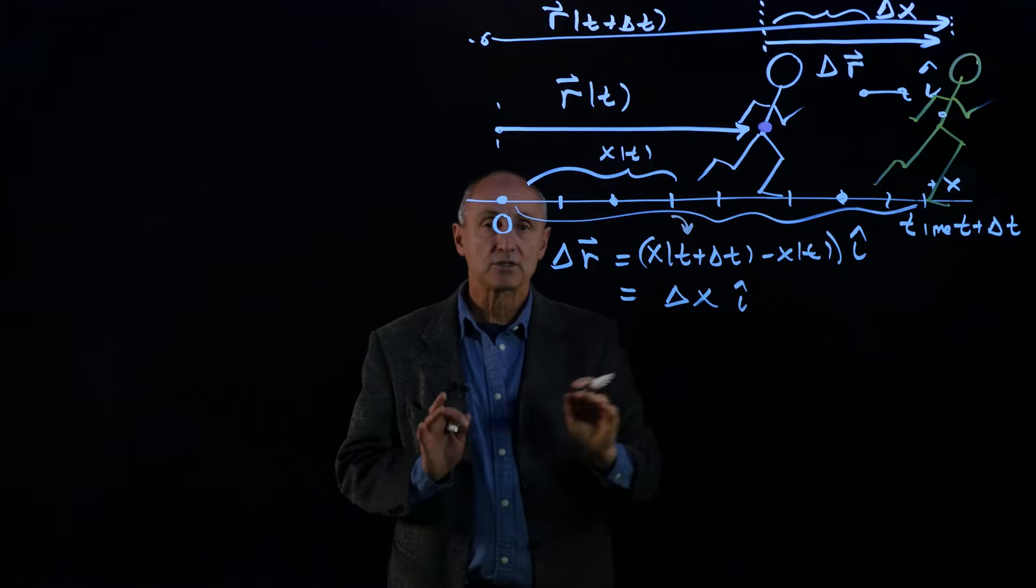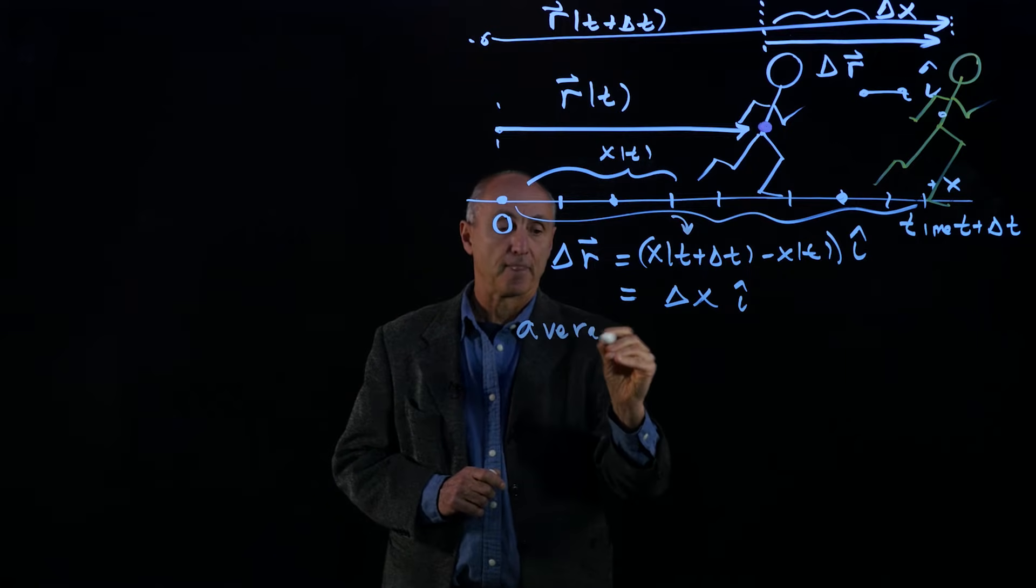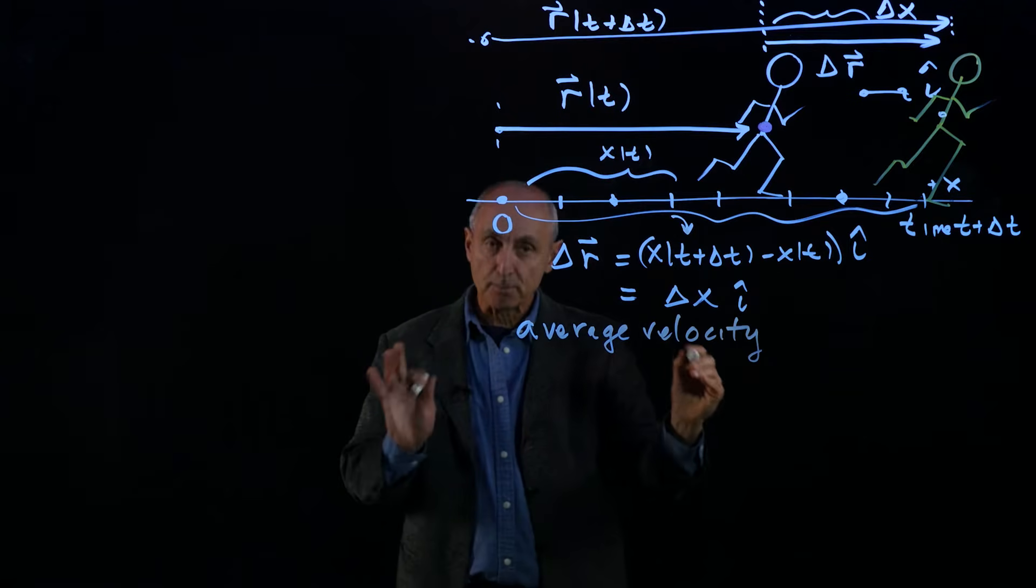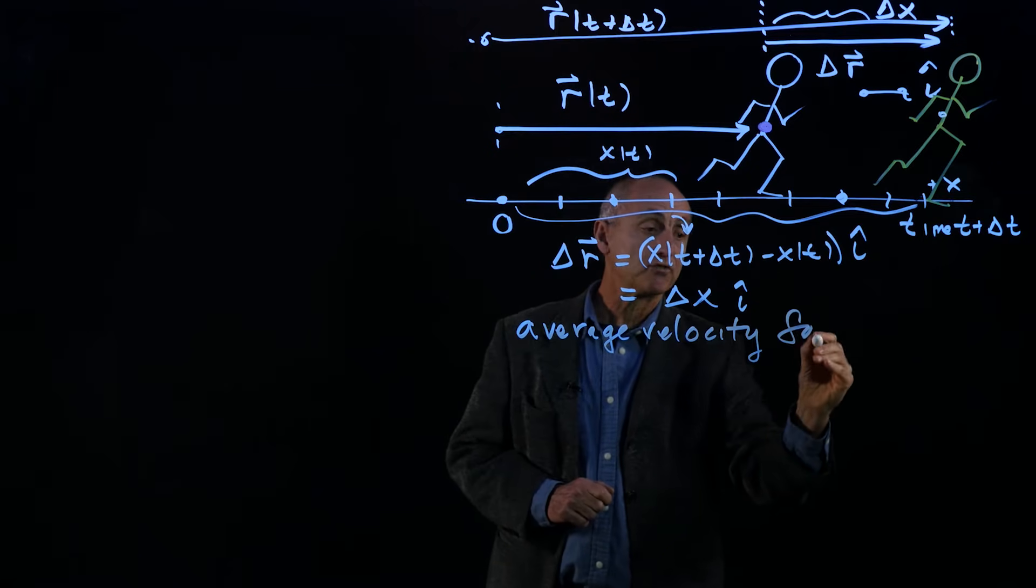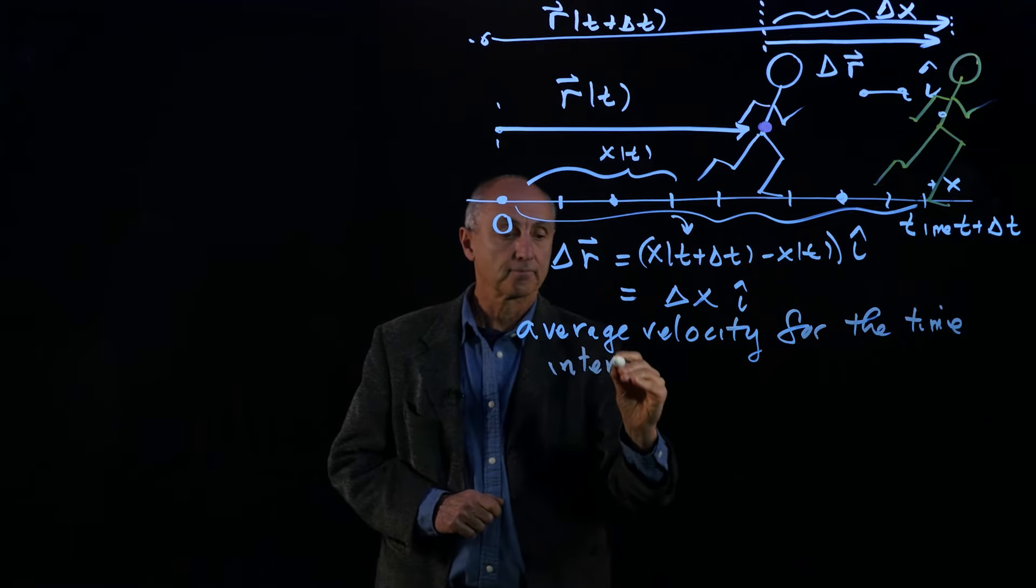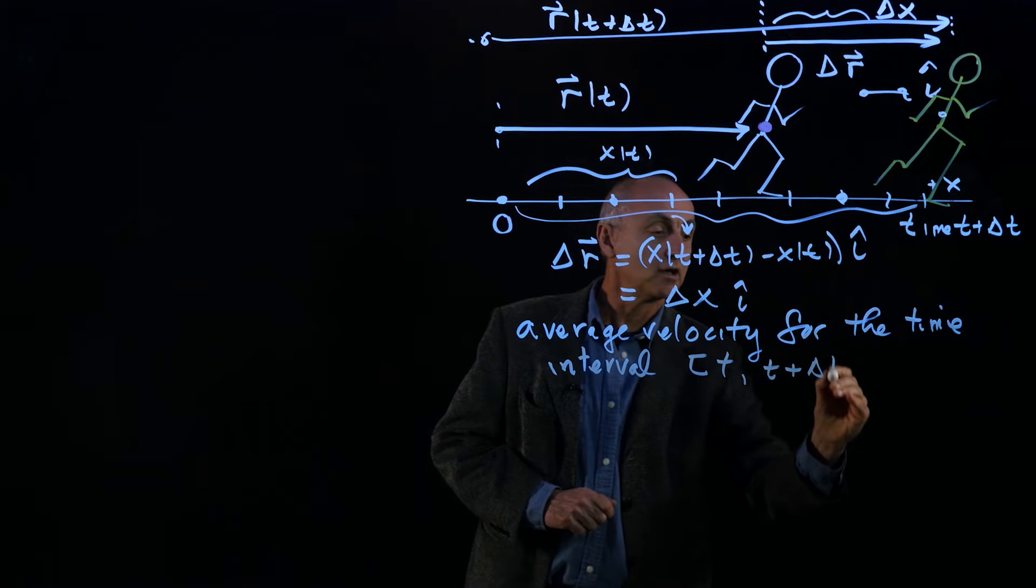And now what we'd like to do is describe what we call average velocity. And our average velocity depends on our time interval. So this is for the time interval t to t plus delta t.